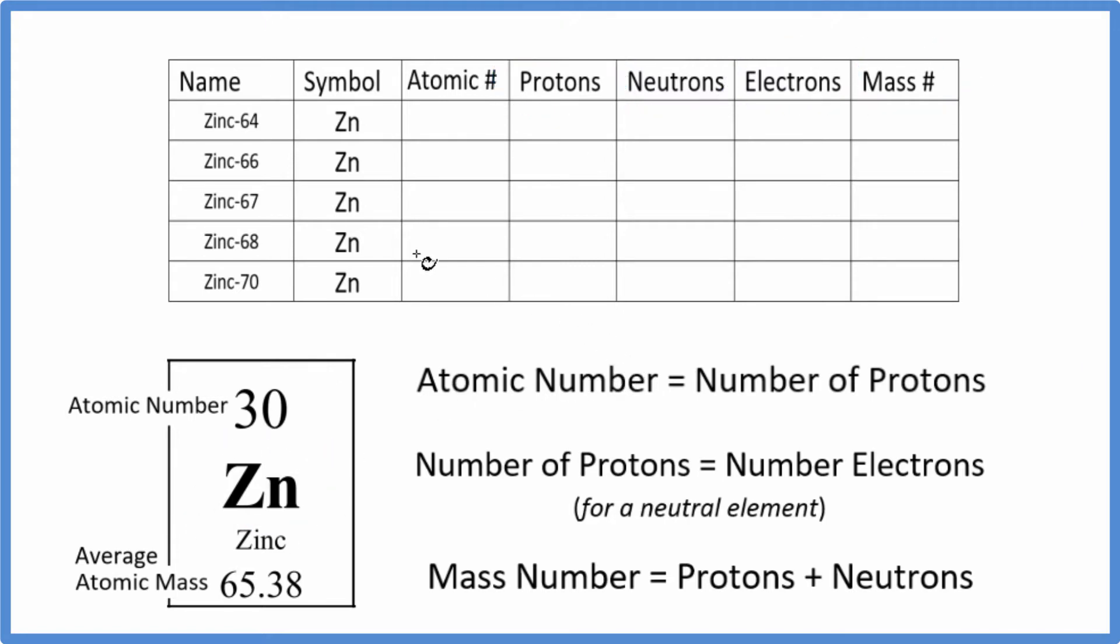Zinc has five stable isotopes. They're right here. And the only thing that's different about these isotopes is the number of neutrons. Because of that, the mass number is different too. We'll talk about the neutrons a little bit later.